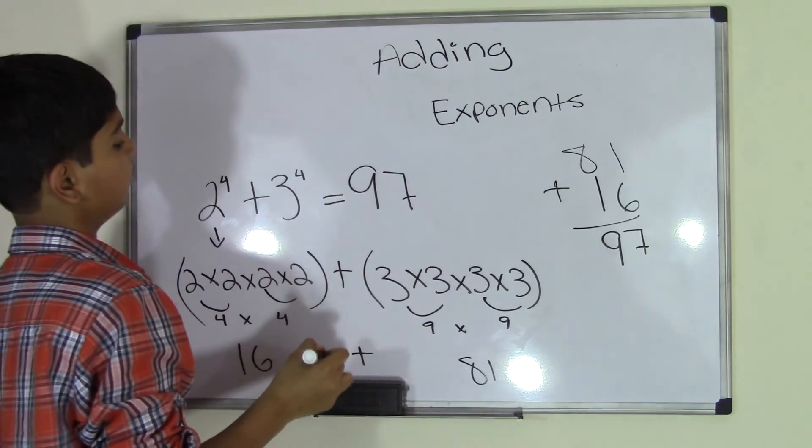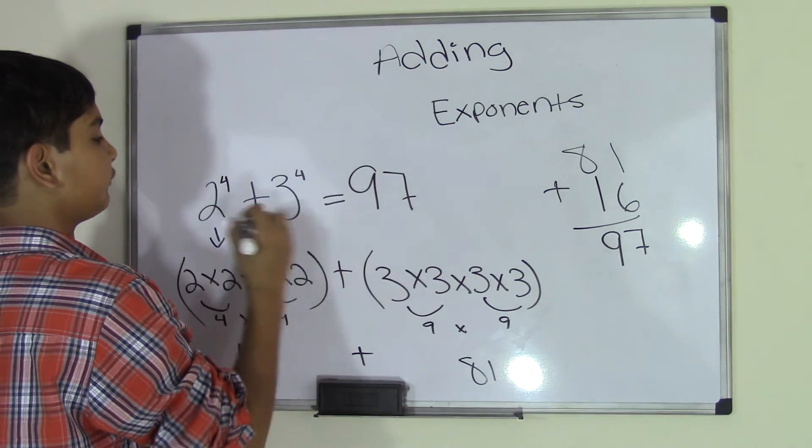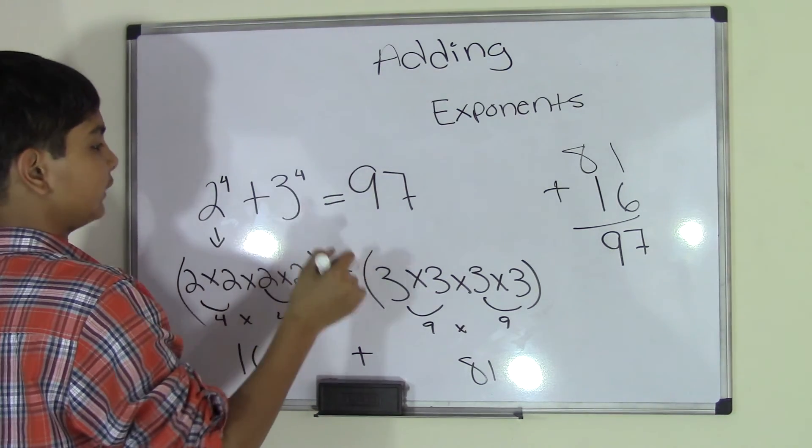And yes, I said sum. Even though we're doing multiplication in this, we call it a sum because we're adding numbers with exponents on top of them.